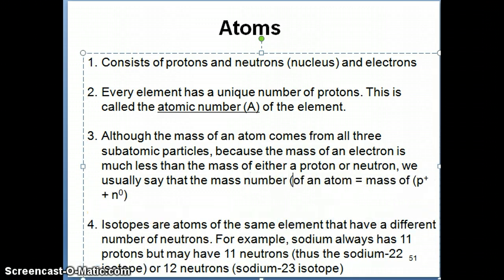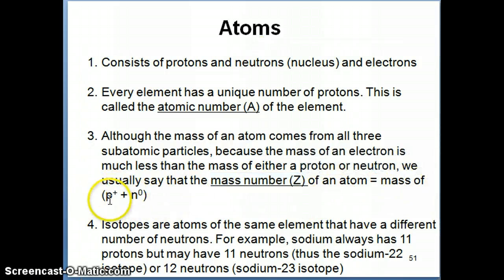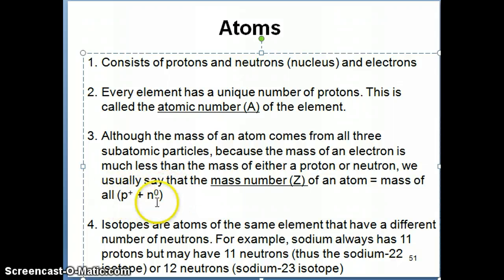We just say that the mass of an atom, which is usually called the mass number, just to make it clear here, the mass number of an atom - and the mass number has the symbol Z - the mass number of an atom is equal to just the mass of all the protons you have plus the neutrons you have. If you have ten protons and eleven neutrons, you're going to add all of those masses together, and that's going to give you the mass number. That's how you can ignore usually the mass of the electron, because the electron's mass is just so small in comparison to the mass of the protons and neutrons.